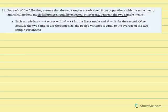Number 11: for each of the following, assume that the two samples are obtained from populations with the same mean — indicating the null, mu1 minus mu2 equals zero. Calculate how much difference should be expected on average between two sample means. This is essentially asking us to calculate the estimated standard error of the mean difference. You need to get used to being asked for these statistics without explicit wording — they may just give you the definition.